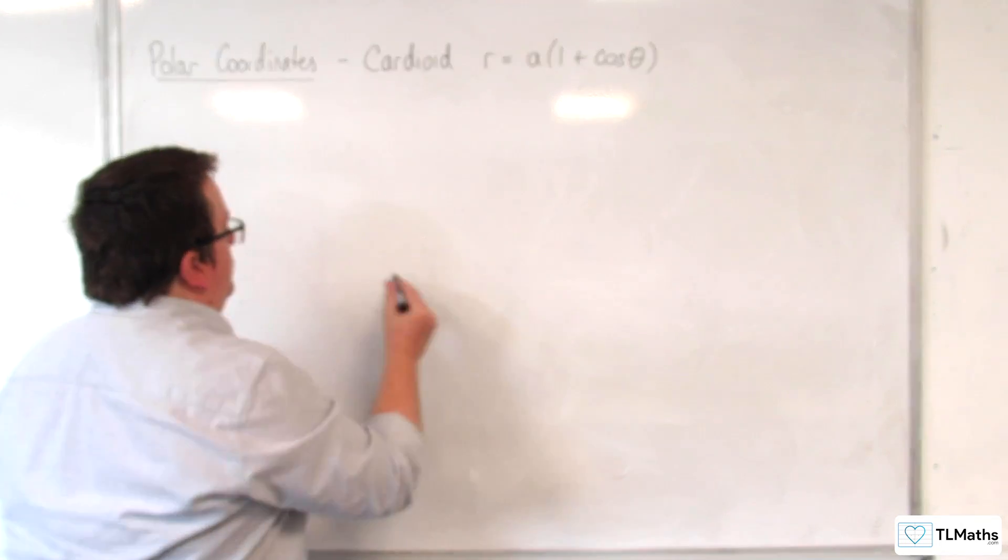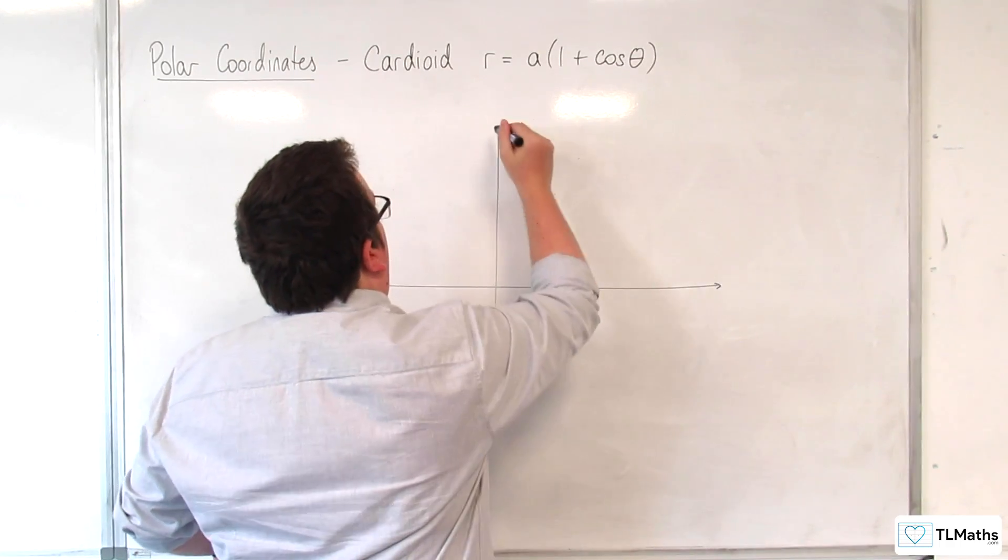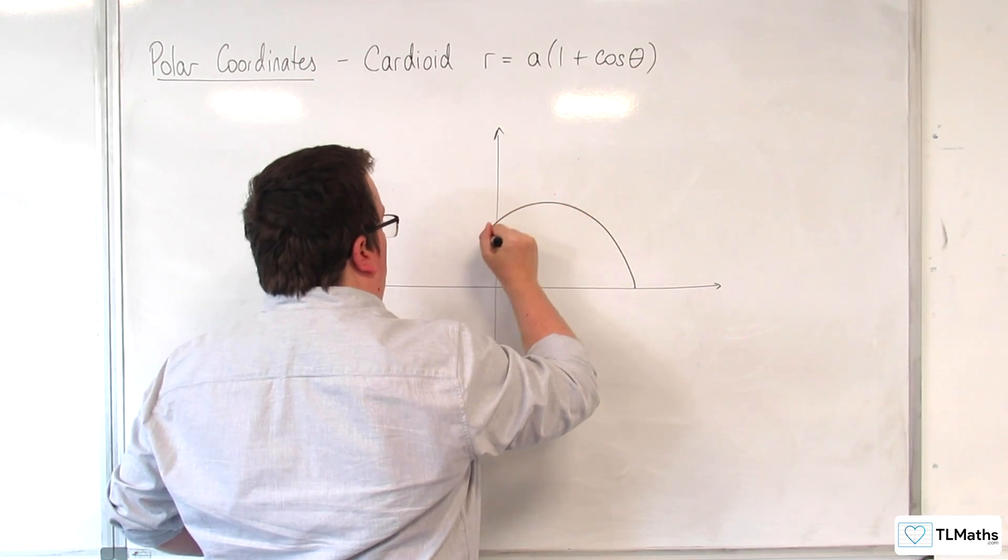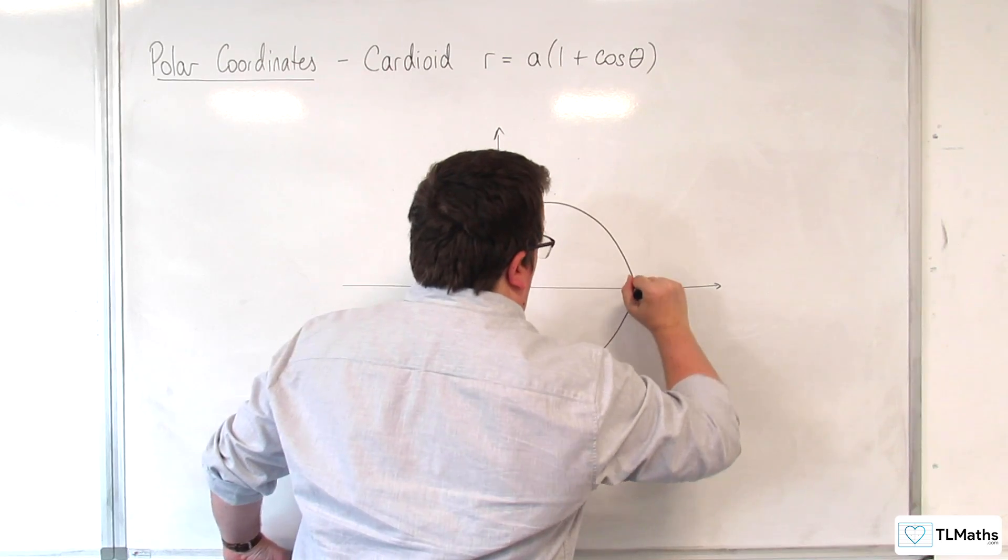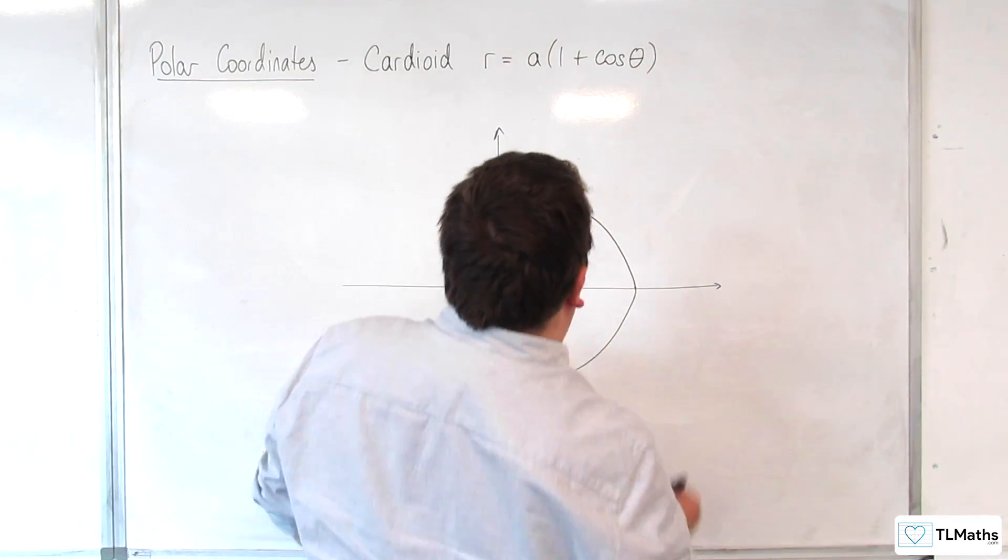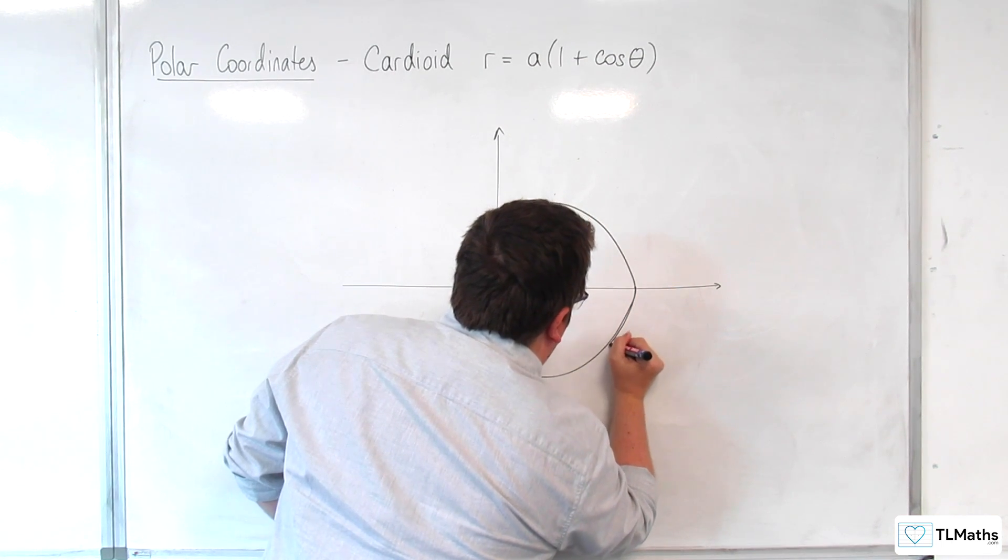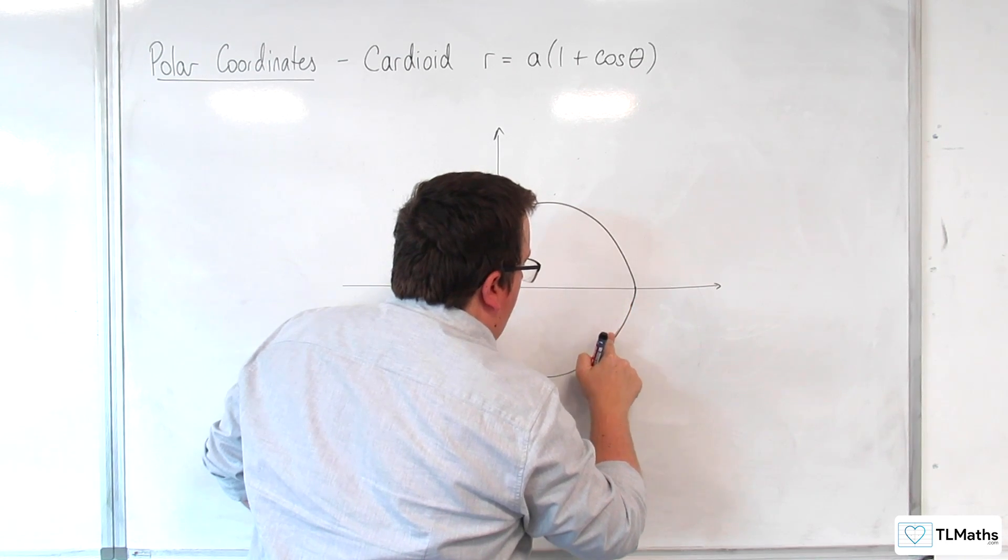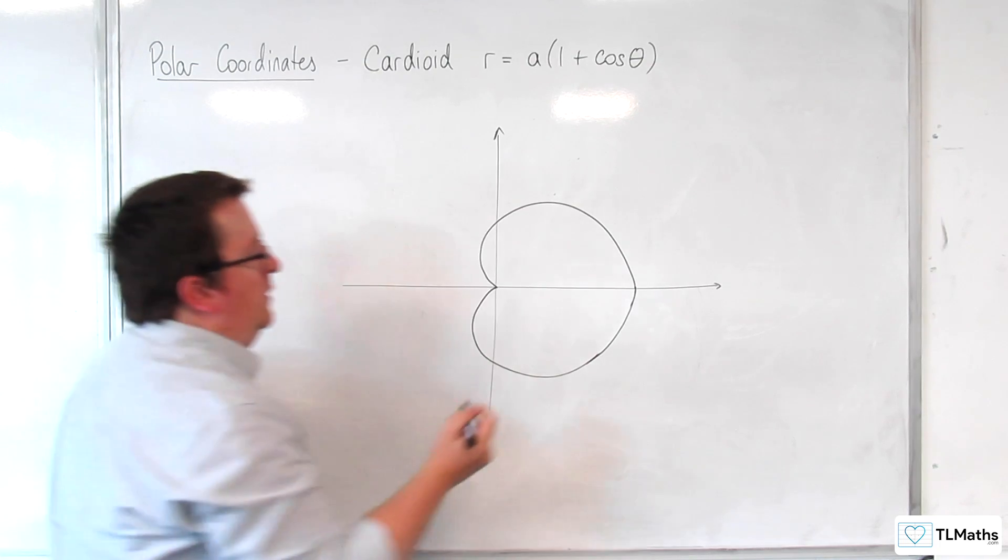So the shape of the cardioid looks like this. It's meant to be kind of symmetric, and probably a bit more rounded here. It looks kind of like a heart on its side, but it's not a perfect kind of heart shape.